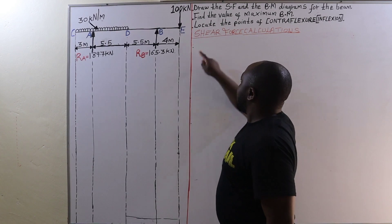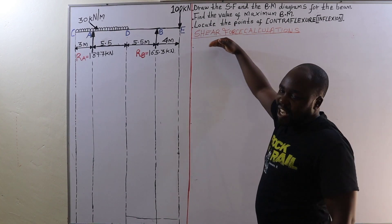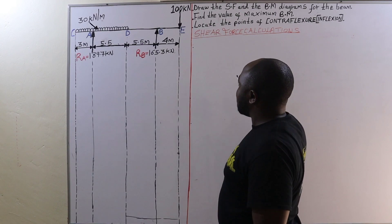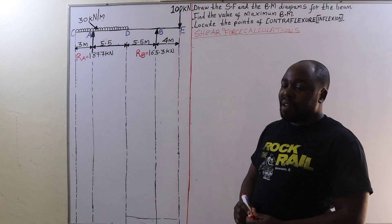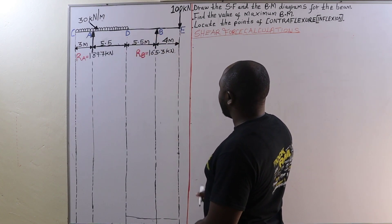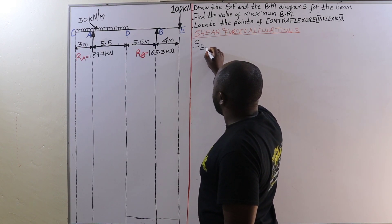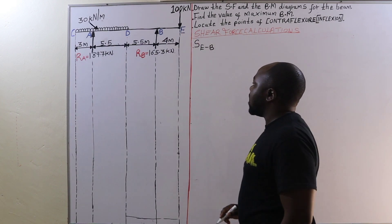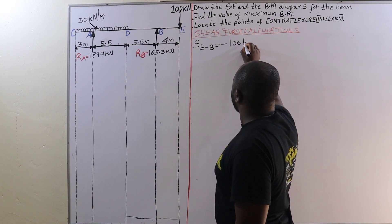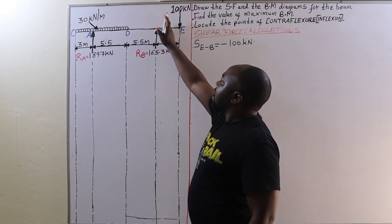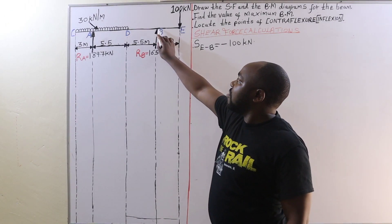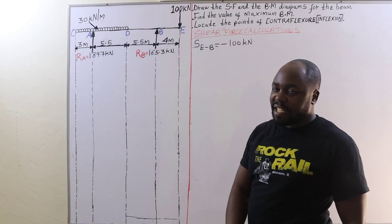After calculating the reactions at points A and B, the next step is shear force calculations, which will help us plot a shear force diagram below this loaded beam. We are going to calculate the shear forces between all the sections on our beam. Beginning with the shear force between E and B — the overhanging end — the shear force is negative 100 kilonewtons, because on the right-hand side of a point between E and B we only have 100 kilonewtons, and since it is on the overhanging end, it is negative 100.